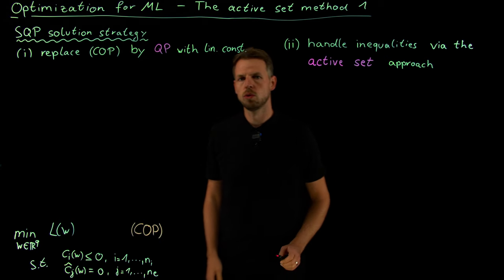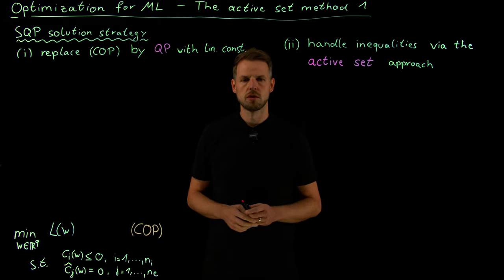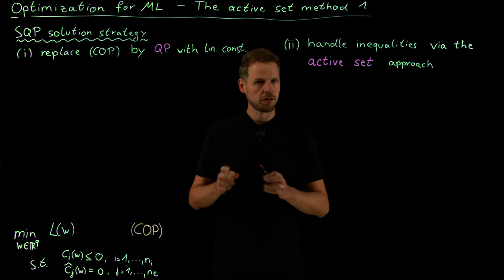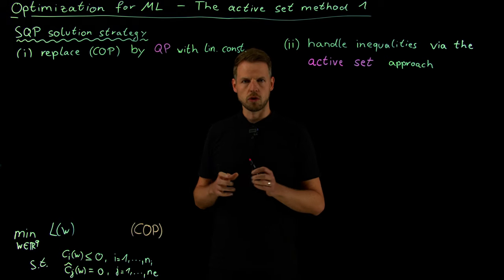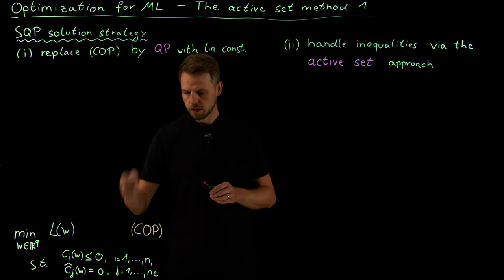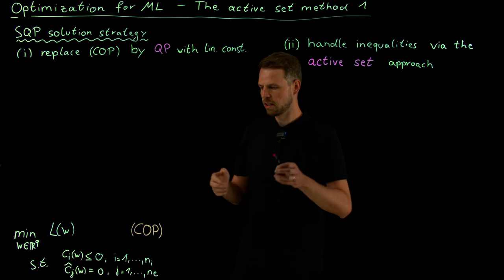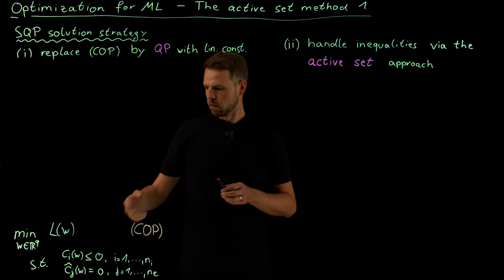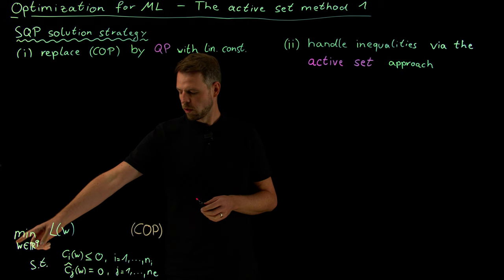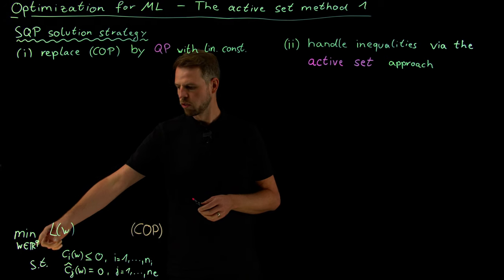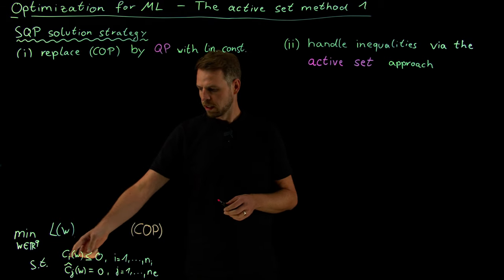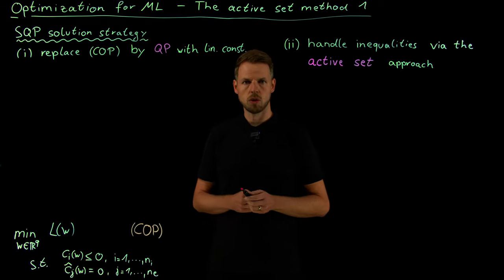Hello everyone and welcome back to the last two videos of this lecture series on optimization for machine learning. What we have treated in the last few videos were the cases of constraints, where we have additional inequalities or equalities that constrain the set from which we can select our vector w. So here w is from real numbers, q of them, so unconstrained, and then we constrain the set by saying that some inequalities and equalities need to hold.